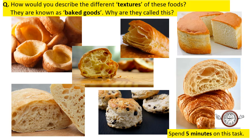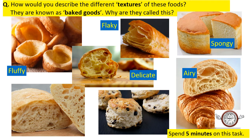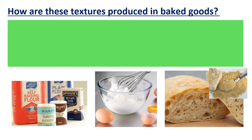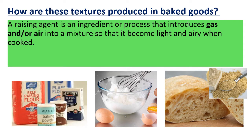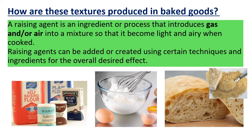The descriptions for these baked goods are: fluffy, flaky, spongy, delicate, airy, chewy, and crumbling. These are all sensory words used within food and nutrition to describe such products. These sensory textures — the fluffiness, the airiness, and so on — are caused by a raising agent. A raising agent is an ingredient or process that introduces gas and/or air into a mixture so that it becomes light and airy when cooked.